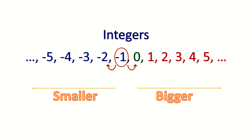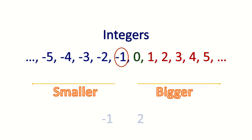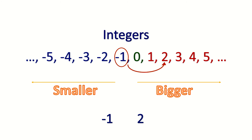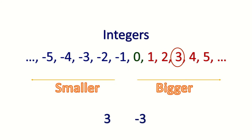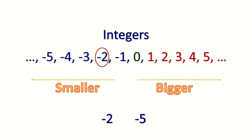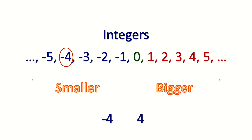So now that we've learned this concept, let's do a few examples. Will negative 1 be bigger or smaller than 2? Negative 1 is to the left of 2, so negative 1 will definitely be smaller. Will 3 be bigger or smaller than negative 3? 3 is far to the right of negative 3, so 3 will definitely be bigger. Will negative 2 be bigger or smaller than negative 5? Yes, negative 2 will definitely be bigger. And will negative 4 be bigger or smaller than 4? Negative 4 is definitely smaller than 4.